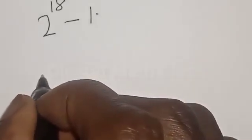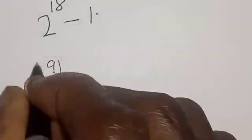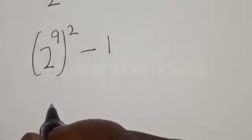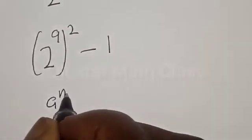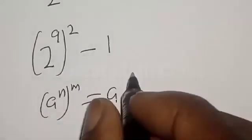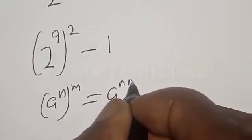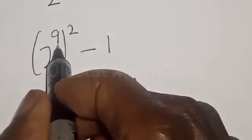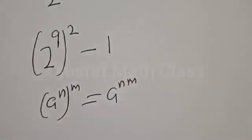That's 2 raised to power 18 is 2 raised to power 9 raised to power 2 minus 1. Remember, if you have a raised to power n raised to power m is the same thing as a raised to power nm. That is, if you have 9 times 2, that will give you 18 back.